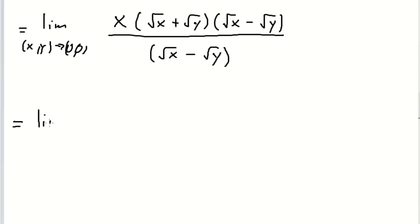This leaves us with the limit as x and y go to (0,0) of x times (square root x plus square root y). This is a very easy limit to figure out. You can directly substitute. It's zero times (zero plus zero), which is just zero. So the limit is zero.